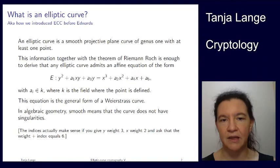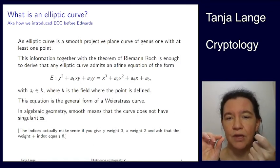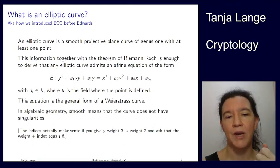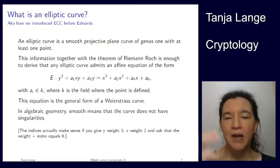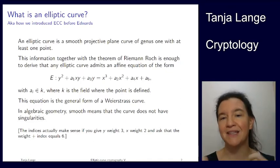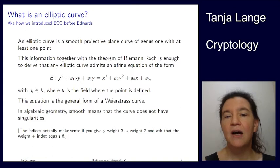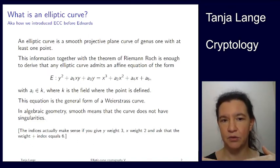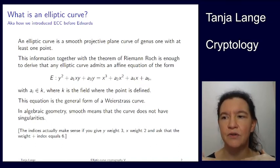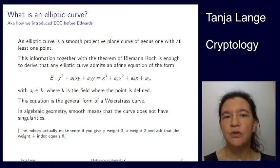So any elliptic curve can be written as an equation of y squared plus a1xy plus a3y equals x cubed plus a2x squared plus a4x plus a6. And I have a comment at the bottom that the indices sort of make sense. It does when you look at each of those. So y you give weight 3 and x you give weight 2, and then the index in the a is the missing weight.